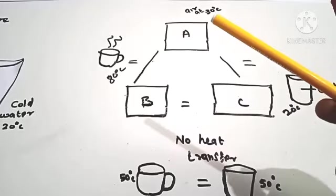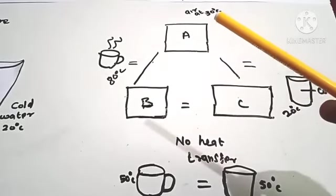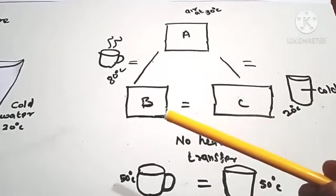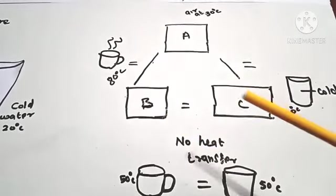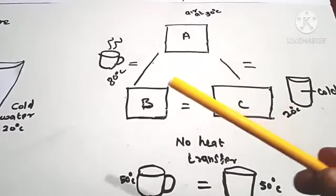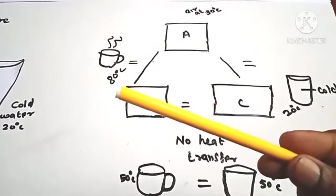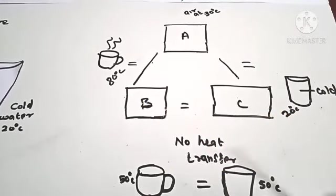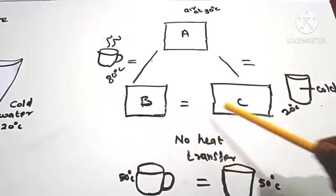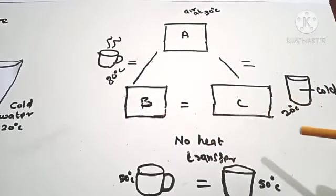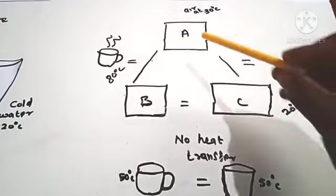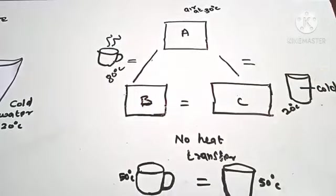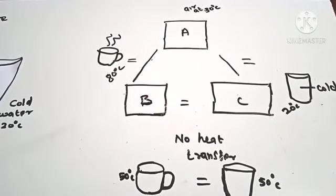If A and C is considered, it is 30 degrees Celsius initially. System B and C — the hot body is 80 degrees Celsius and the cold body is 20 degrees Celsius. So if A and B are thermally in equilibrium, and A and C are thermally in equilibrium, then B and C are also thermally in equilibrium. That is the zeroth law of thermodynamics.